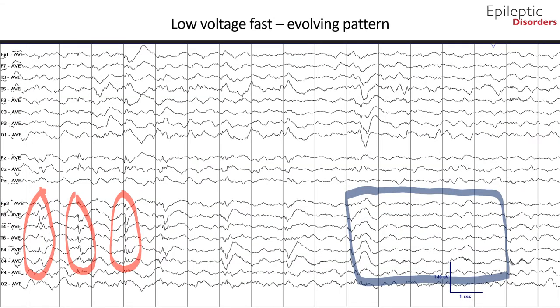In the average montage of the same page, there are clear epileptiform sharps with maximal amplitude over F8 and a field to T4, FZ, T6, and F4. Again, note the post-ictal slowing greatly appreciated in the right frontal region, outlined in dark blue.